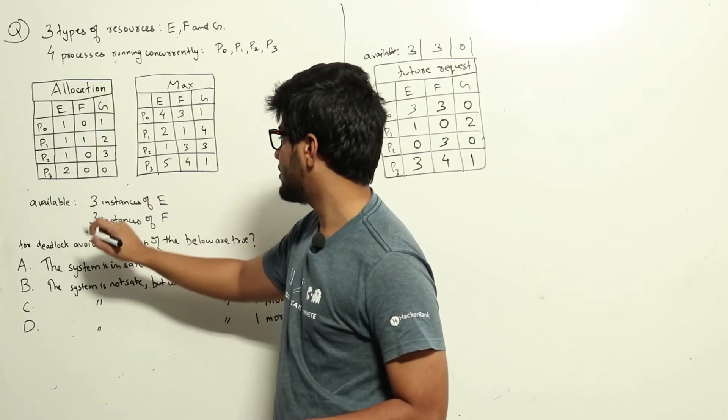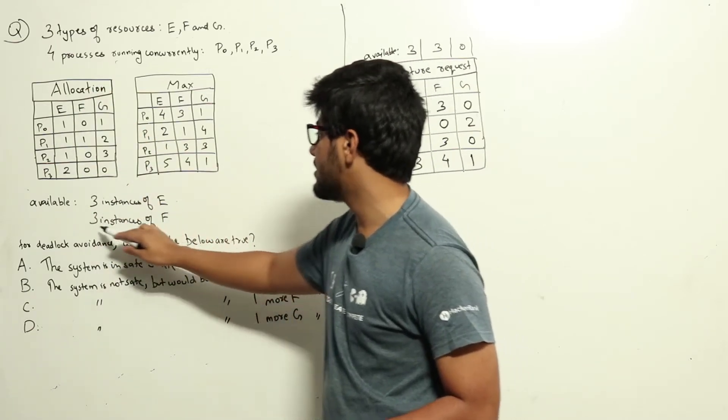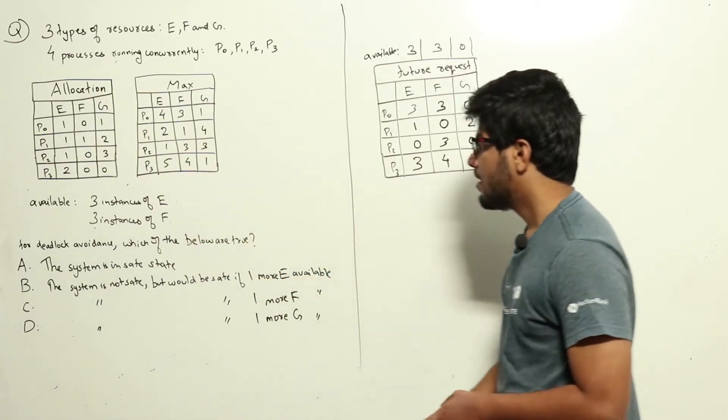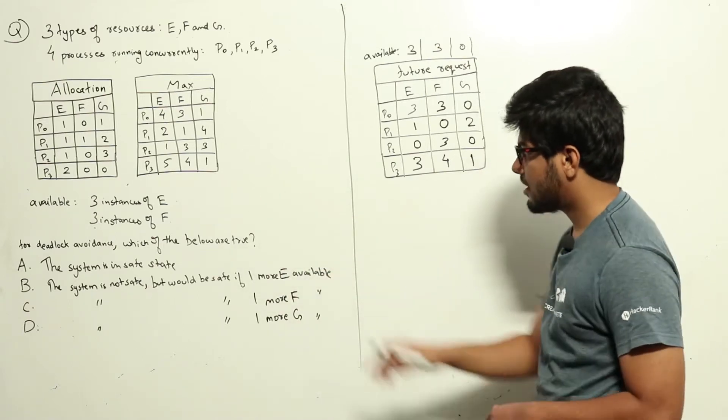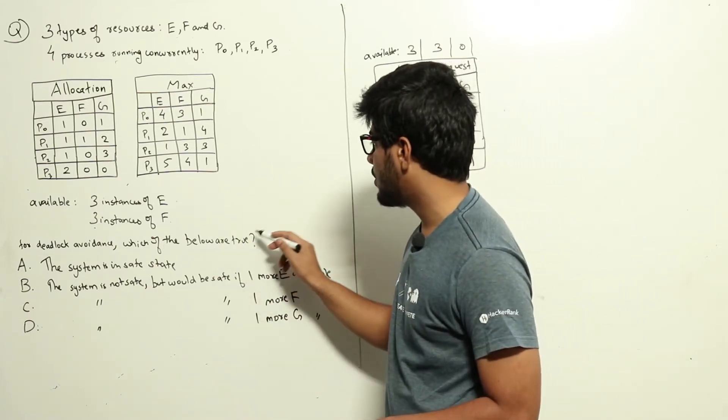Currently after allocation, we have three instances of E and three instances of F available. From a deadlock avoidance perspective, which of the below are true?